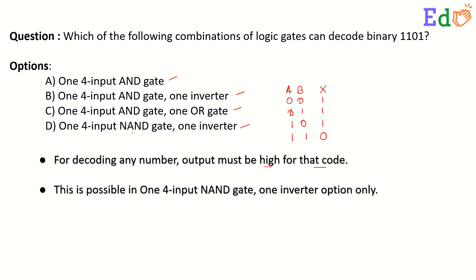We need one 4-input NAND gate and one inverter to construct a 4-bit decoder for 1101. The correct answer to the question is option D.